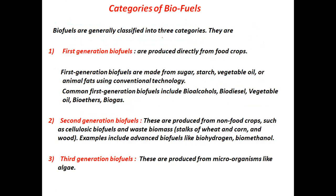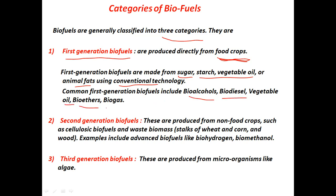Biofuels are generally classified into three main categories. First generation biofuels are produced directly from food crops. They are made from sugar, starch, vegetable oil, or animal fat using conventional technology. Some common first generation biofuels include bio-alcohols, biodiesel, vegetable oil, bioethers, and biogas.